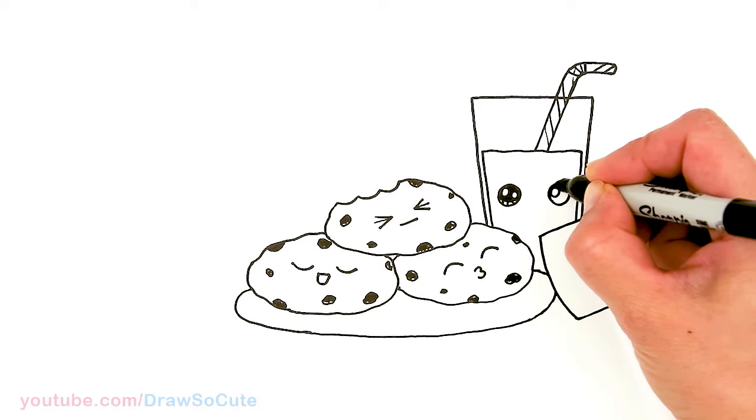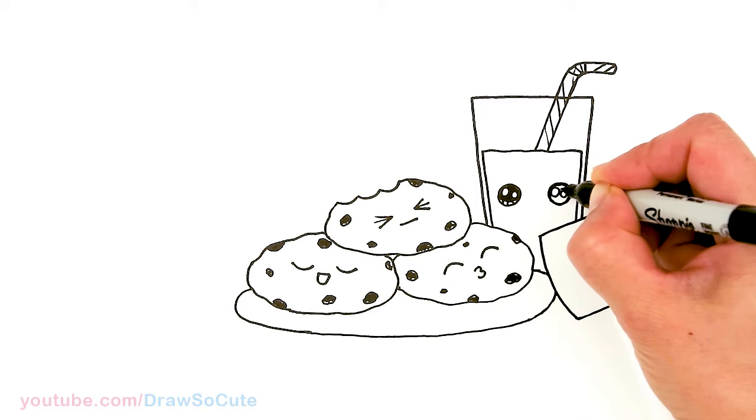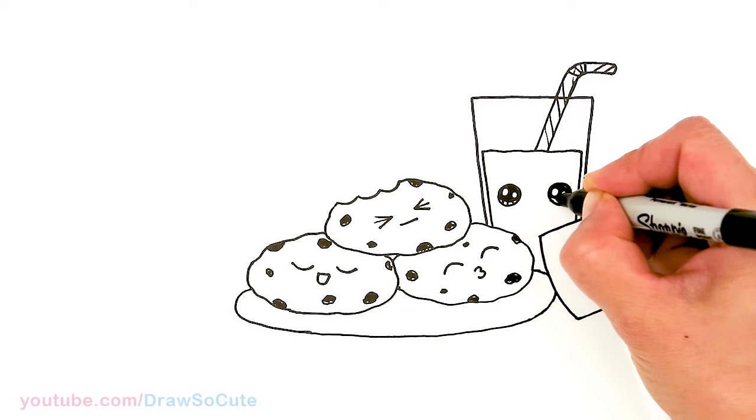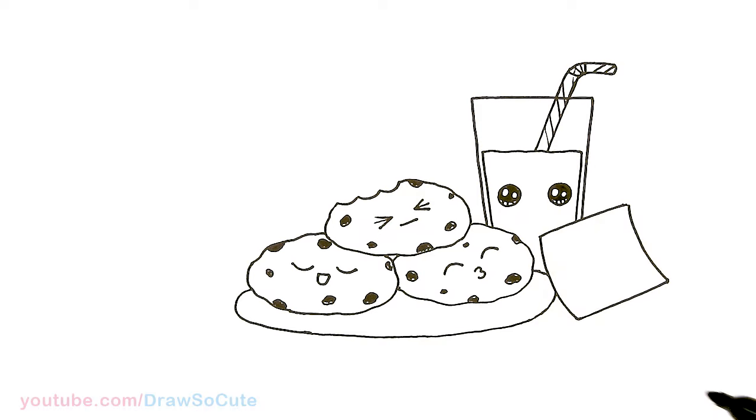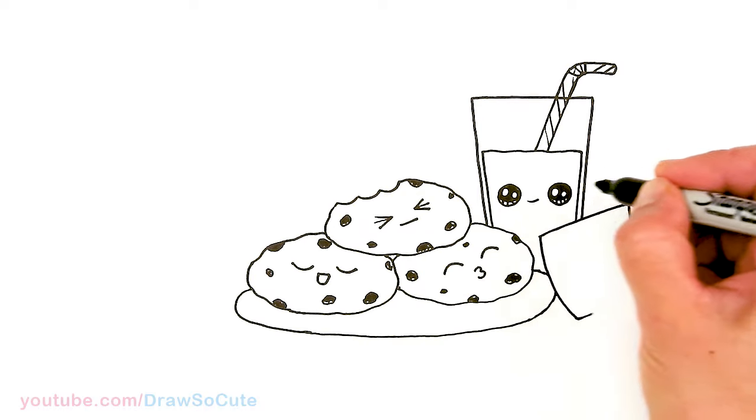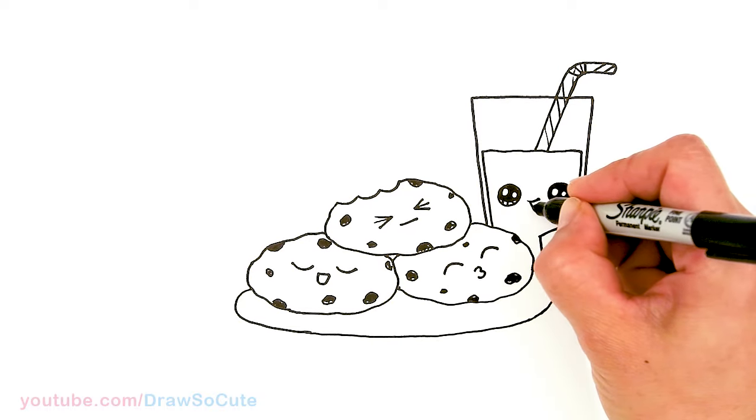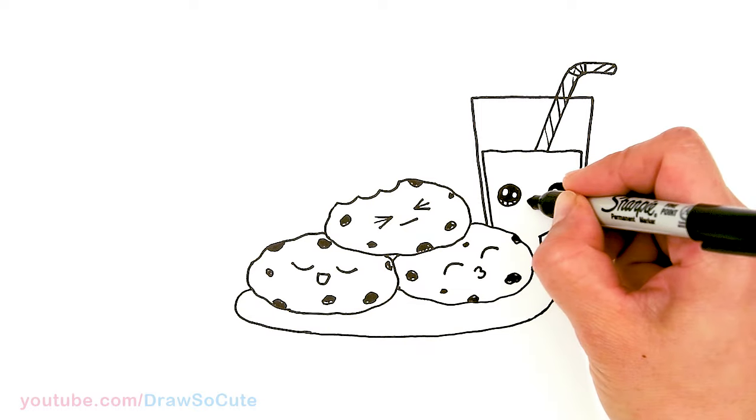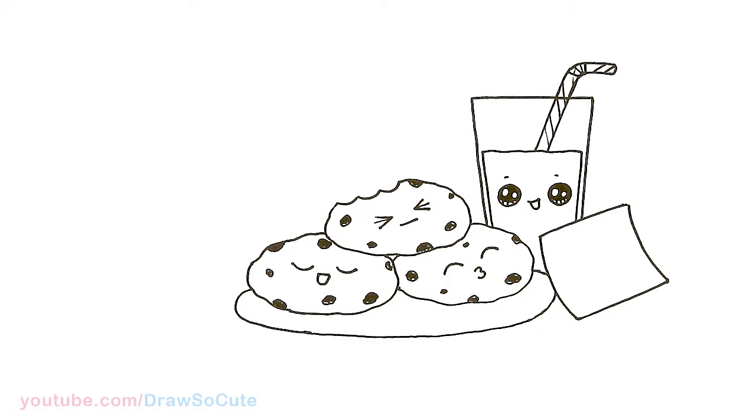So same thing over here. And the sharpie's a little big, it's kind of hard to get in here. Okay, so two small circles on the top. And the lines at the bottom. And then let's give our milk a cute little smile. So we just come here with a little curve, comes up a little bit, and maybe connected with a U. A little line at the top for the eyes.